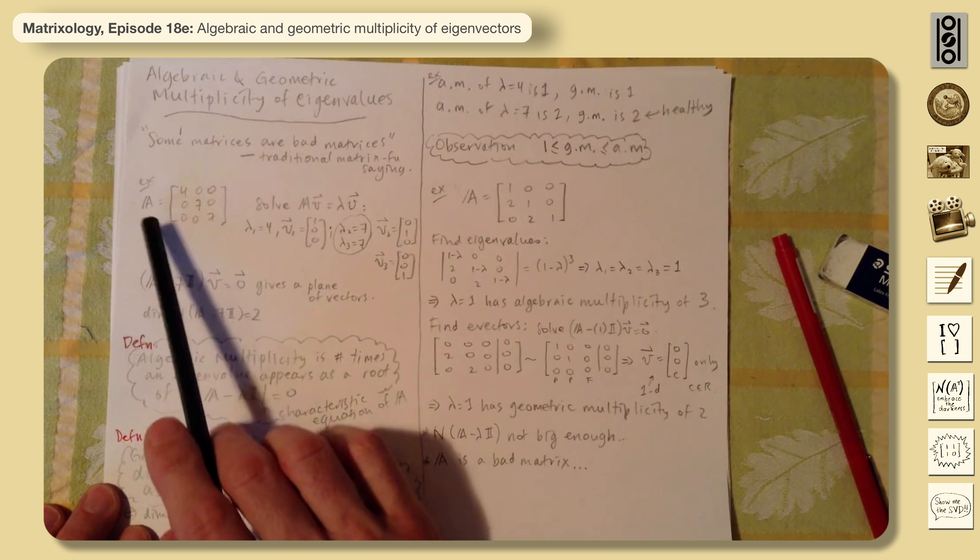And we will say that 7 has a geometric multiplicity of 2. There's a plane associated with it. So any vector in that plane. And we have a basis for it. Two vectors in the basis. Dimension is 2. So it's the dimension of the null space of A minus lambda I. And so I've written these things up here.